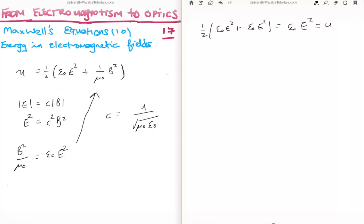That is equal to epsilon zero E squared is equal to the energy density. Okay so we've shown that the contribution from both the electric and magnetic fields is the same. So right that's a very interesting result.